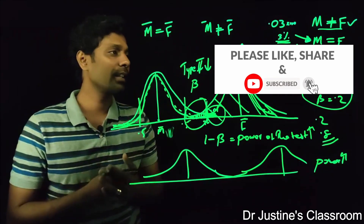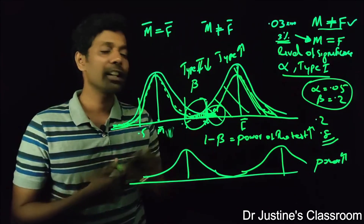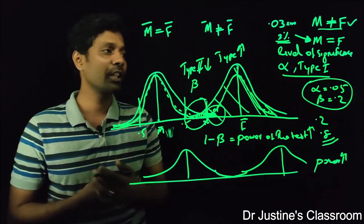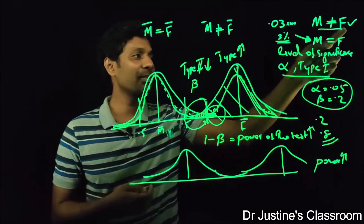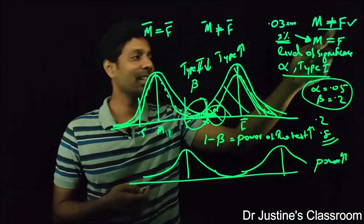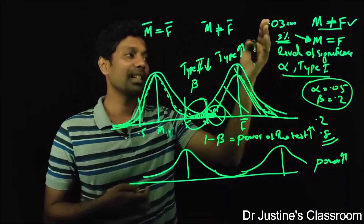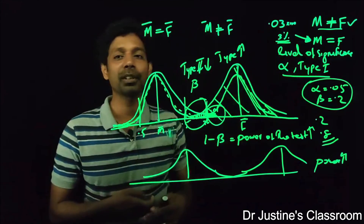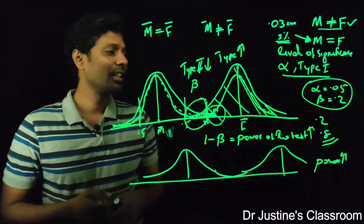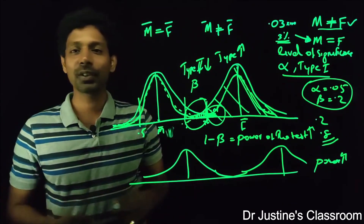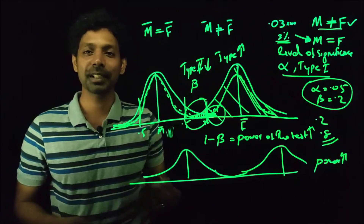So to summarize: type 1 error is rejecting the null hypothesis when it is true, and type 2 error is accepting the null hypothesis when it is false. That's it for today. We'll see you in the next class. Bye.